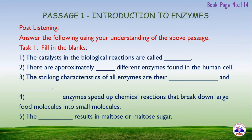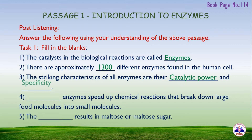Fill-in-the-blank answers: (1) The catalysts in biological reactions are called enzymes. (2) There are approximately 1,300 different enzymes found in the human cell. (3) The striking characteristics of all enzymes are their catalytic power and specificity. (4) Digesting enzymes speed up chemical reactions that break down large food molecules into small molecules. (5) The hydrolysis results in maltose sugar.